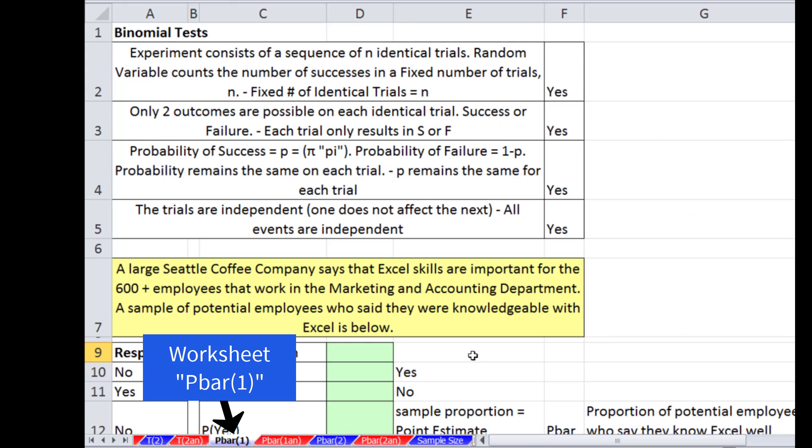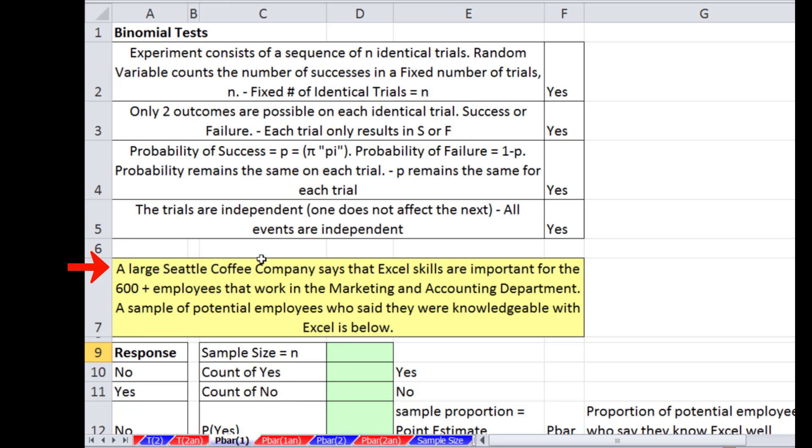Let's go over to Excel. Here's our example: A large Seattle coffee company says that Excel skills are important for the 600 plus employees that work in the marketing and accounting department. A sample of potential employees who said they were knowledgeable with Excel is below. Notice the employee is answering either yes or no. This is a binomial experiment, a nominal variable with two possibilities. In order to use the normal distribution, we have to make sure and check that our binomial tests are met, and there are four of them.